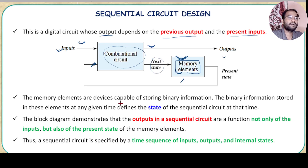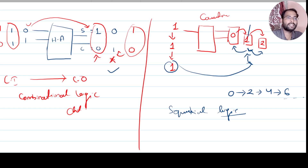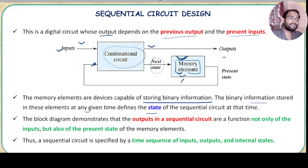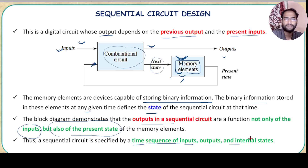It says that memory elements are devices capable of storing binary information — that is an important factor. The binary information stored in these elements at a given time defines the state of the sequential logic circuit. For example, if the current display shows 1, then we say the current state of the device is 1. The block diagram demonstrates that the outputs of the sequential circuit are not only a function of inputs, but also a function of the present state. What is the current output will decide what will be the next output. Thus a sequential logic circuit can be specified as a time sequence of inputs, outputs, and internal states.